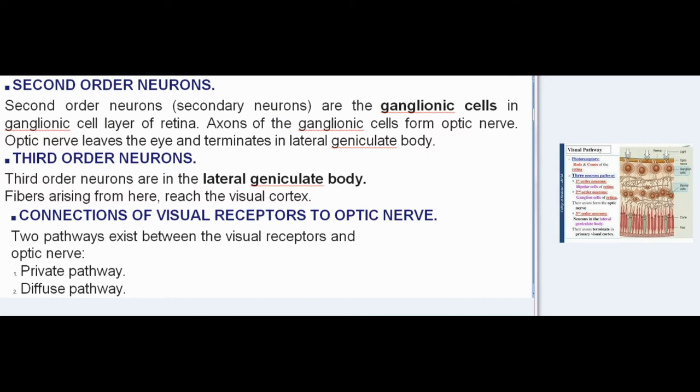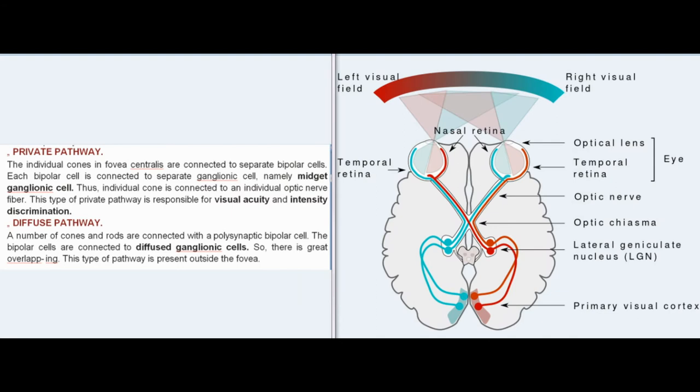Connections of visual receptors to optic nerve: Two pathways exist between the visual receptors and optic nerve — private pathway and diffuse pathway. In the private pathway, the individual cones in fovea centralis are connected to separate bipolar cells. Each bipolar cell is connected to a separate ganglionic cell, namely a midget ganglionic cell. Thus, each individual cone is connected to an individual optic nerve fiber.